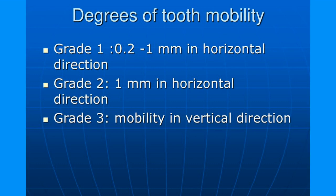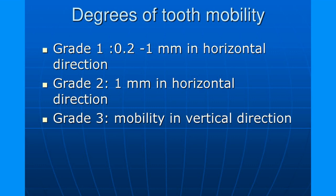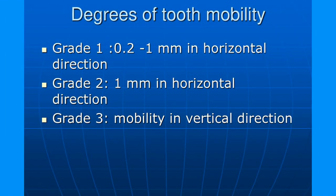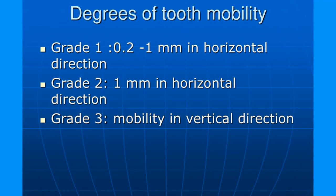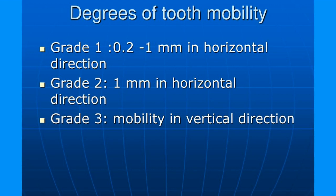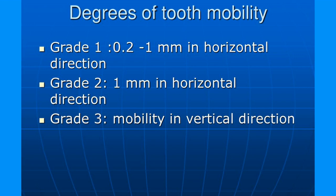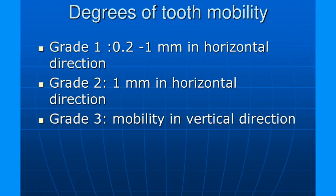In Grade 2, it is one millimeter but less than two millimeters in the horizontal direction, either buccolingual or mesiodistal. In Grade 3, which is the worst type, it is more than two millimeters. You are also able to depress the tooth — meaning you can push it further down vertically — in addition to the buccolingual or mesiodistal movement.